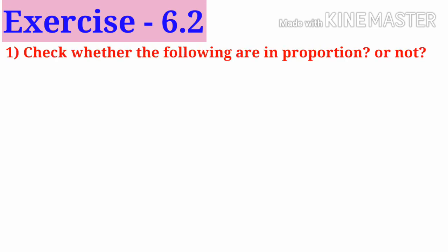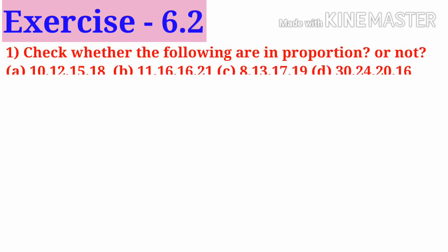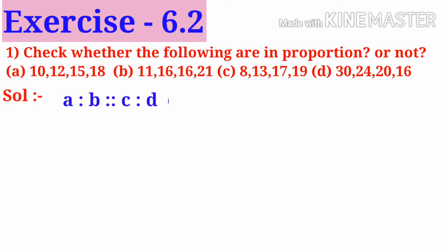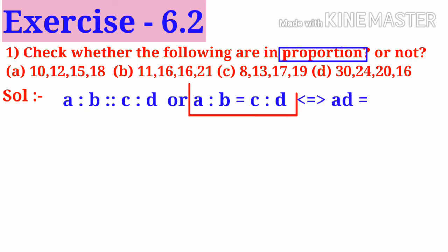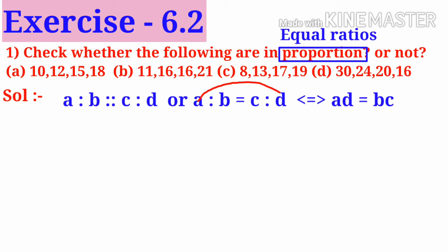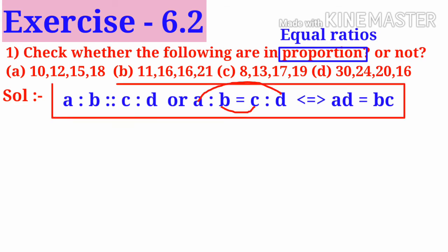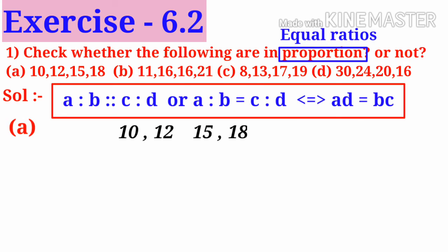Check whether the following are in proportion or not: A, B, C, D. Solution. Before going to do the solution, let us know the concept. Proportion means equal ratio. It can be denoted as A to B is as C to D, or A to B is equal to C to D. Then it can be written as A×D is equal to B×C. Take the first problem: 10, 12, 15, 18.